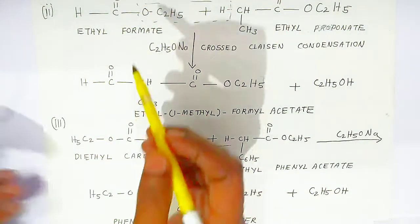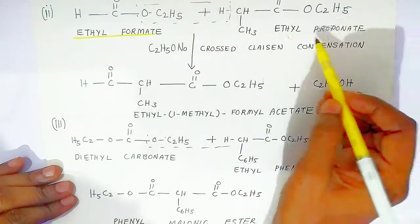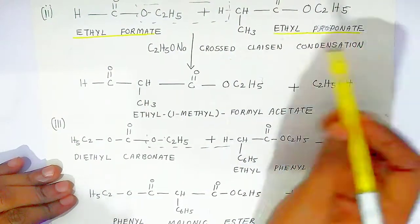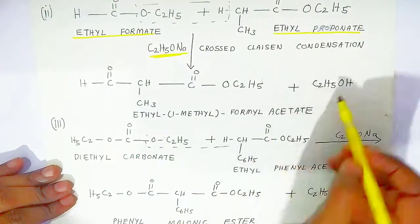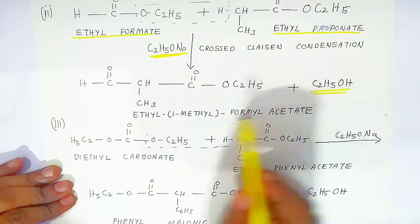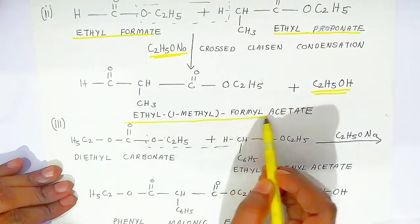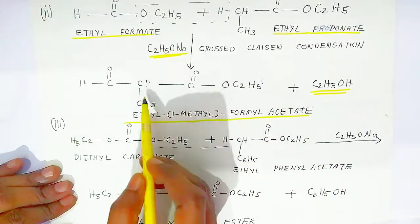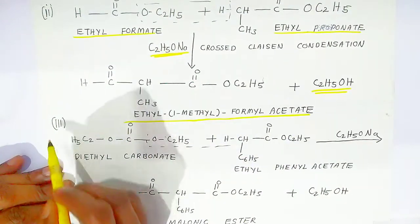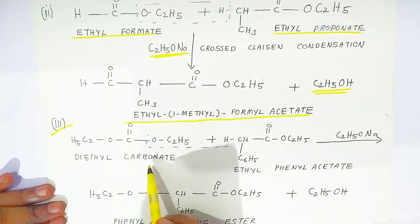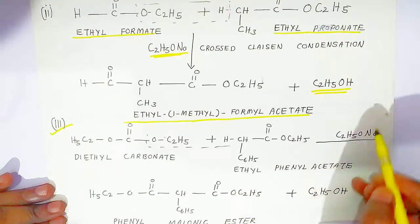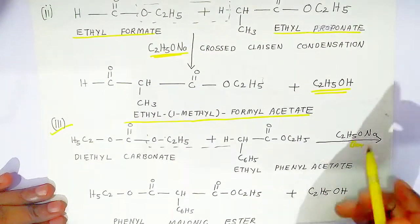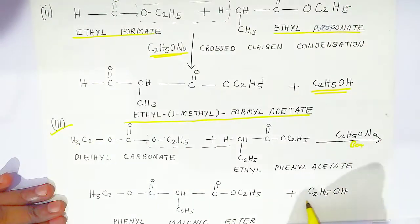The second application: ethyl formate combines with ethyl propanoate, and cross Claisen condensation takes place in the presence of base. They condense by giving out ethyl alcohol and form ethyl 1-methyl formyl acetate. The third application: diethyl carbonate (a type of ester) combines with ethyl phenyl acetate in the presence of base, causing elimination of alcohol to give phenyl malonic ester.